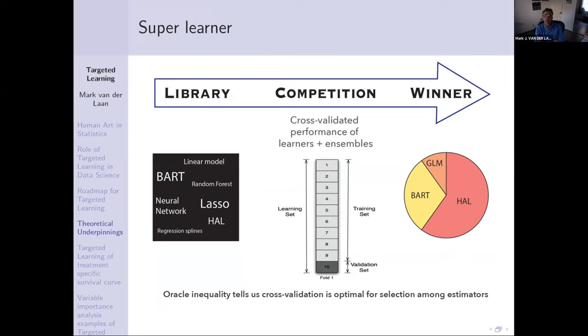Targeted maximum likelihood has two ingredients: one is super learner, and one is the targeted maximum likelihood step. What is the idea of super learner?